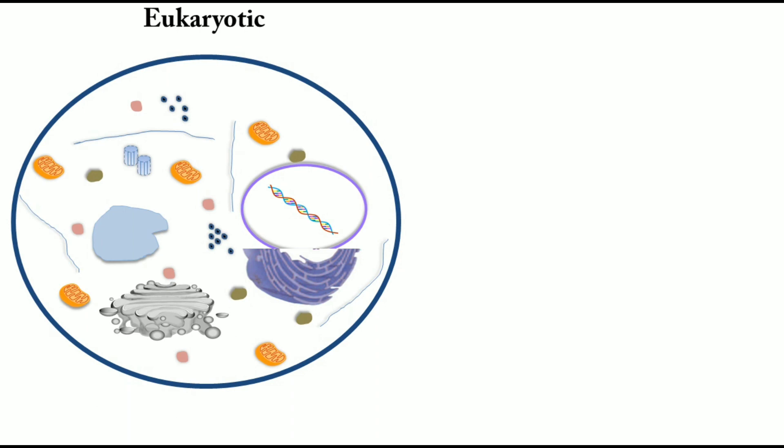The cytoskeleton consists of thread-like structures of three types: microfilaments, intermediate filaments, and microtubules. These form the skeleton of the cell. Just as an animal body has a skeleton on which muscle cells are attached giving it shape, the cytoskeleton gives shape to the cell.